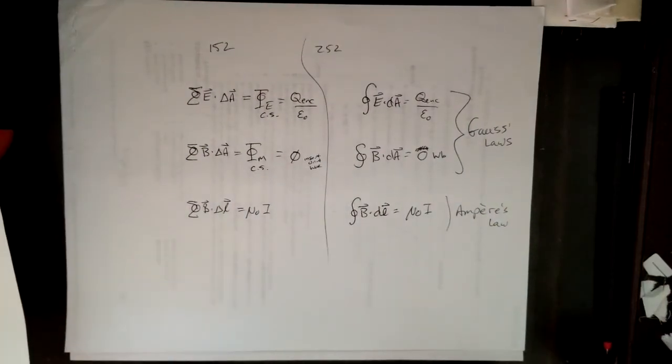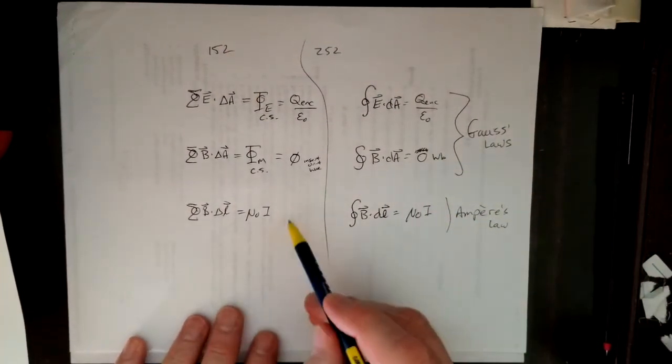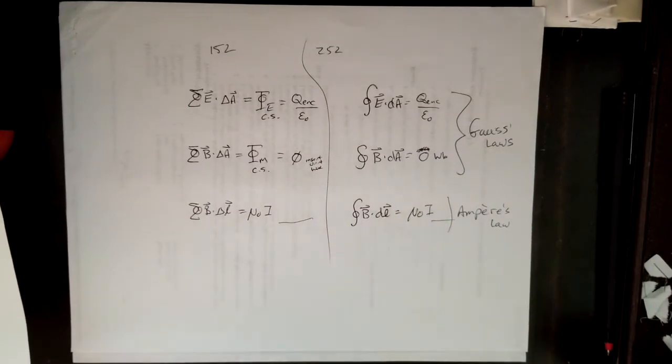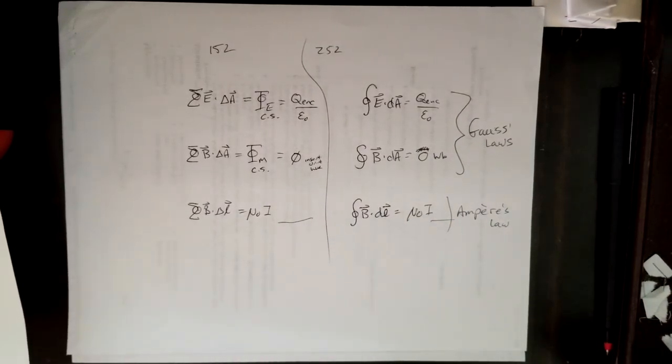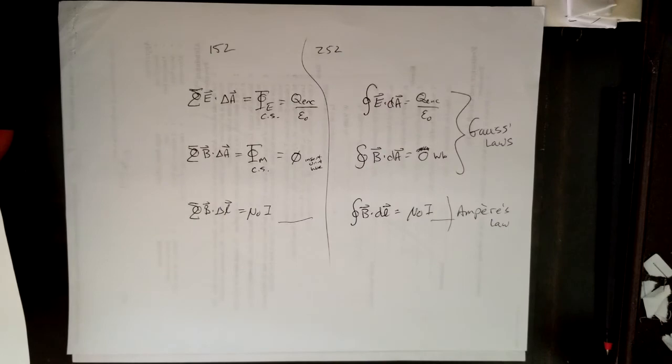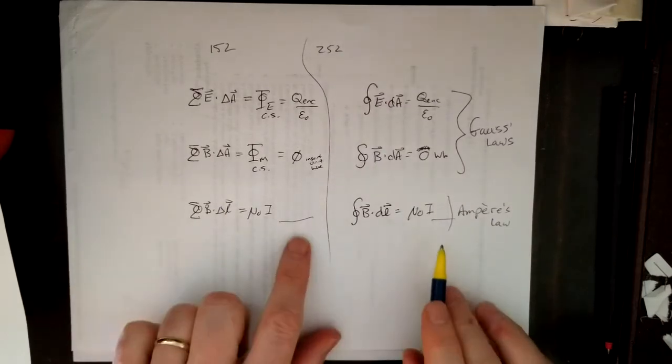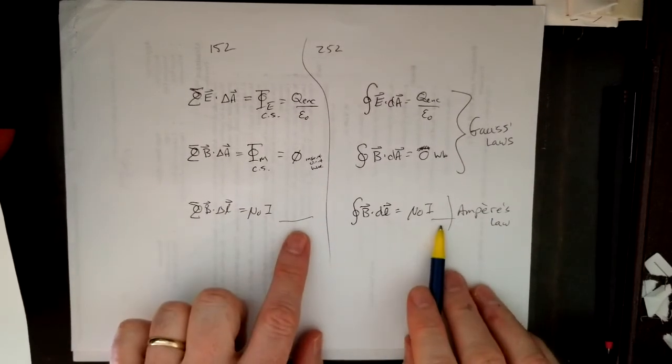Now, the reason I said we have two and a half of them is that there is another piece that is missing here that will get filled in later on. And we need to cover some other material first before I can justify that properly. But that's where Maxwell comes in.